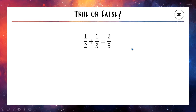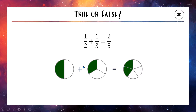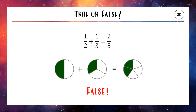Let's have a look at a picture to see if it actually makes sense. Here we have 1 half and here we have 1 third. If we added these two green pieces together, would we get 2 out of 5? No — a half is already bigger than 2 fifths, so 1 half plus 1 third cannot equal 2 fifths. This statement is false. Adding fractions isn't as simple as adding the tops and the bottoms.